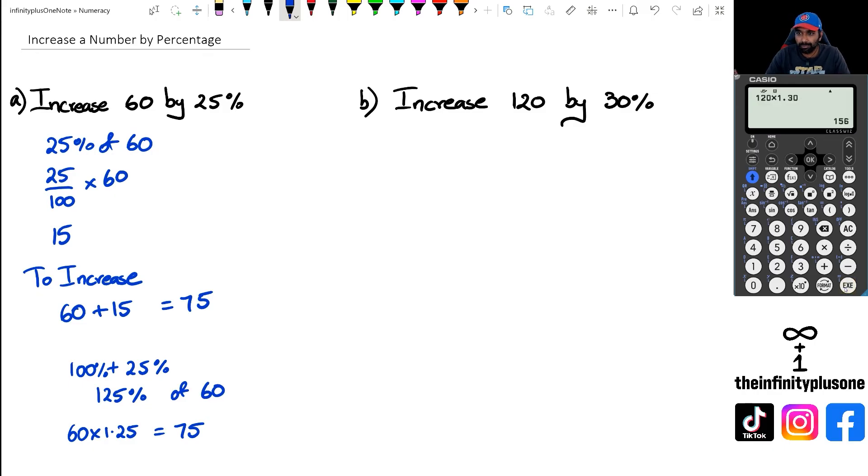But let's actually do it this way and see if it works out. My first step is to work out 30% of 120. So I've got 30 out of 100 multiplied by 120. I'm not going to use the calculator for this because I can cancel the zeros, and what I've got left is 12 times 3, which equals 36. Therefore to increase, I need to add 120 plus 36, which equals 156.